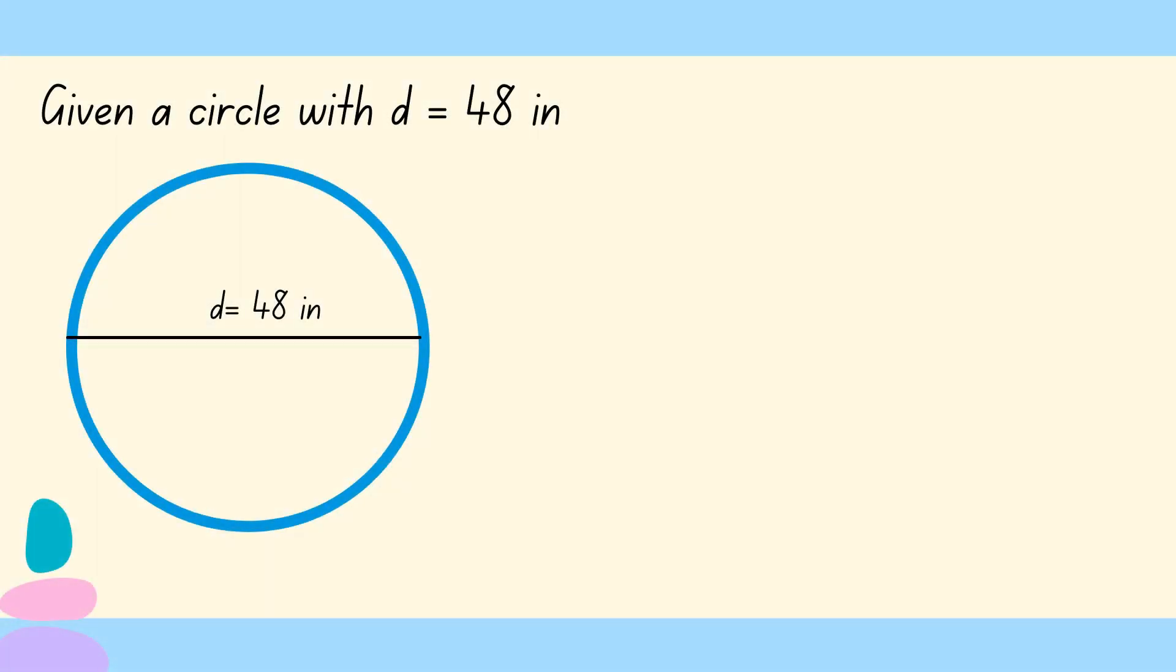So let's have an example. Given a circle with D or diameter equals 48 inches. So our given is diameter of 48 inches. So we'll use the formula C equals pi times D. So wherein pi is equivalent to 3.14 and 48 inches is the diameter. So let us multiply like a whole number.